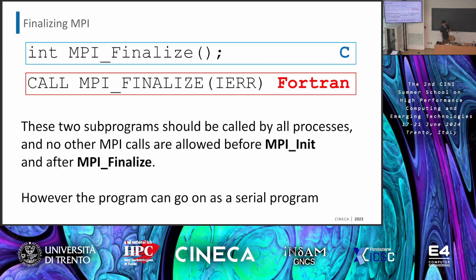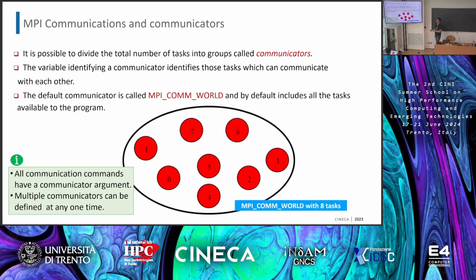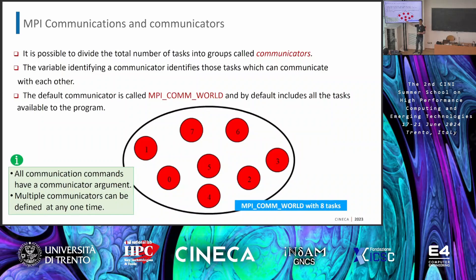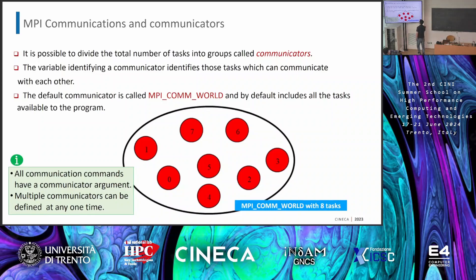When you initialize everything with MPI_Init, you are actually creating your first communicator. A communicator is basically a set of processes — a set of tasks — that are able to communicate with each other. There are ways to create personalized communicators, but we are not covering that. You just have to remember that at the very beginning, MPI_Init creates your very first communicator, which simply involves every task you have been using for the job — the communicator of all. Its name is MPI_COMM_WORLD.